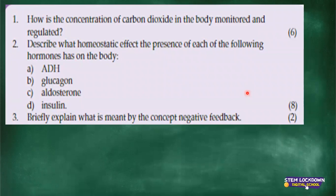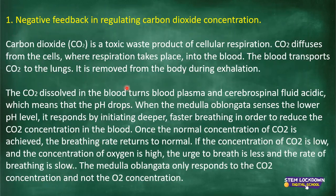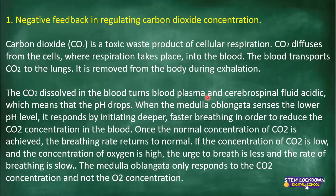I went back to this slide here which has our answer — this is to show you that we did cover this in class. Negative feedback in regulating carbon dioxide concentration: carbon dioxide is a toxic waste product of cellular respiration. It diffuses from the cells where respiration takes place into the blood, then the blood transports carbon dioxide to the lungs, and it is removed from the body during exhalation. The carbon dioxide dissolved into the blood turns the blood plasma and the cerebrospinal fluid acidic.